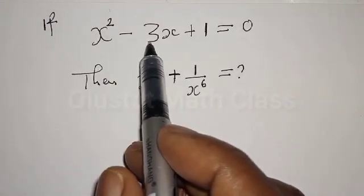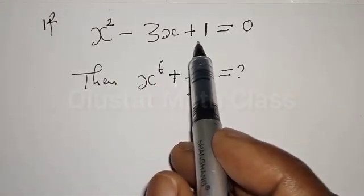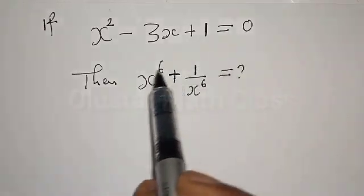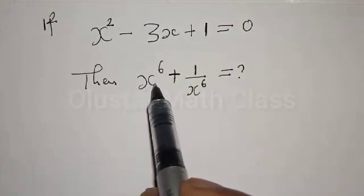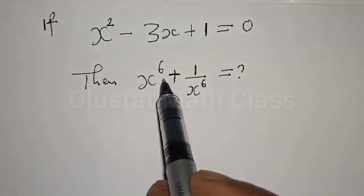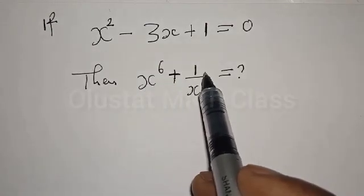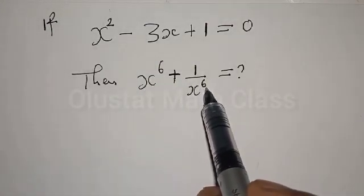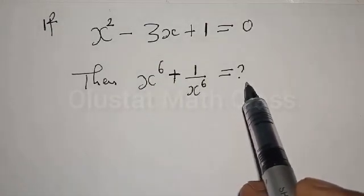If x squared minus 3x plus 1 is equal to 0, then x raised to power 6 plus 1 over x raised to power 6 is equal to what?